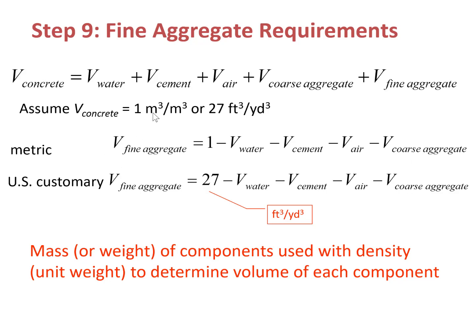In the metric system we are using the unit cubic meter per cubic meter. If we use the US customary system, the volume of fine aggregate equals 27 minus the volume of water minus the volume of cement minus the volume of air and then minus the volume of coarse aggregate. So when we use the US customary system we are using the unit cubic foot per cubic yard.